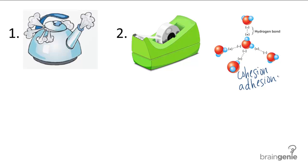So adhesion would be the water molecules sticking to the plant cell wall and cohesion would be the water molecules sticking to the other water molecules.